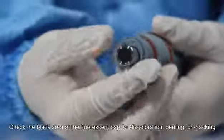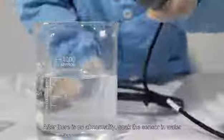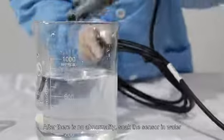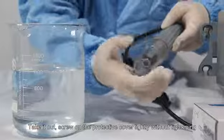Check the black area of the fluorescent cap for discoloration, peeling, or cracking. After there is no abnormality, soak the sensor in water, take it out, and screw on the protective cover lightly without tightening.